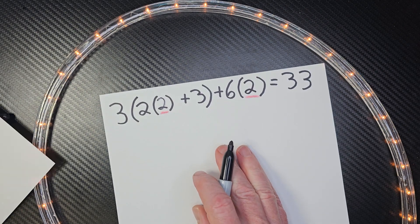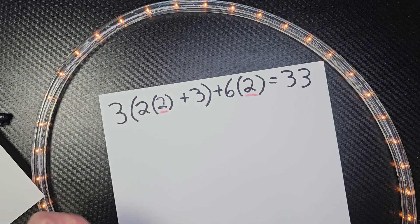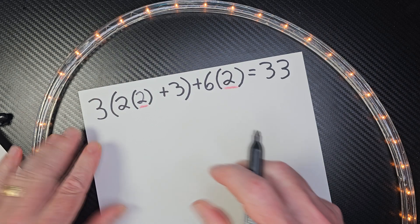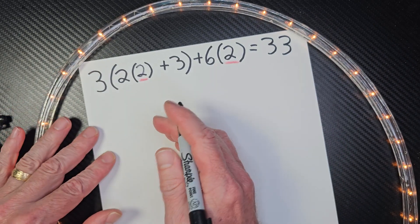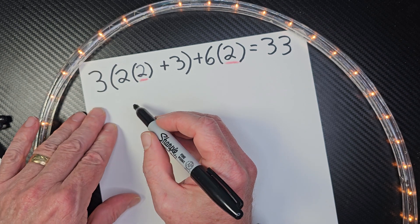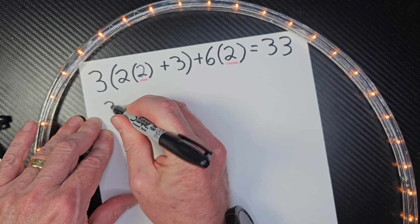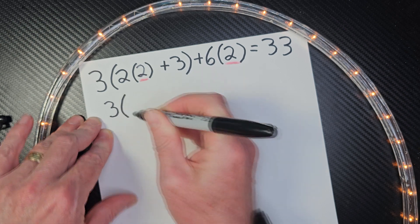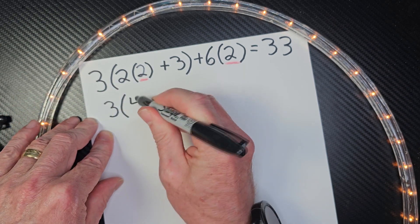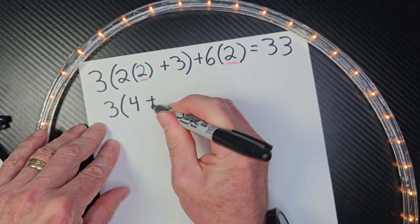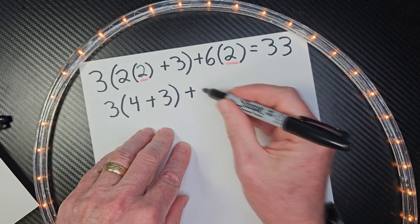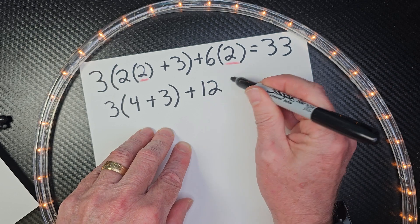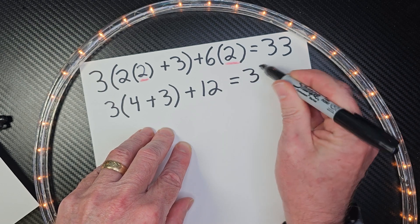So now let's go ahead and do order of operations. Remember, with order of operations, you do what's inside parentheses first, then exponents, then multiplication, division from left to right, and addition and subtraction from left to right. So I'm going to go ahead and rewrite this again. So 2 times 2 is 4 plus 3, put my parentheses here, plus 6 times 2, that is 12, equals 33.